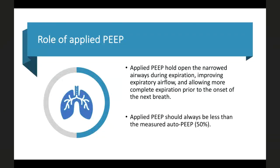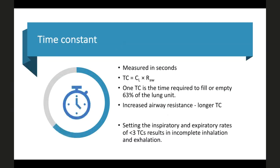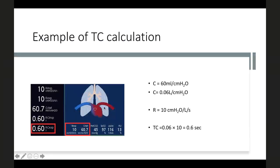To plan expiratory time, understand time constants — measured in seconds, the product of compliance and airway resistance. One time constant is the time required to fill or empty 63% of the lung unit. Higher airway resistance means a higher time constant. The expiratory rate should allow more than three time constants for adequate exhalation and to reduce auto-PEEP.